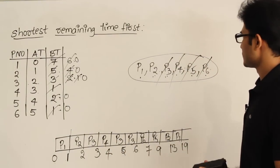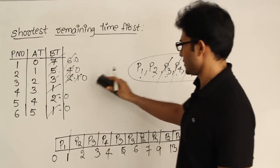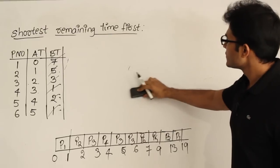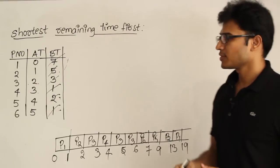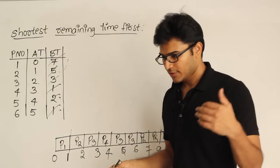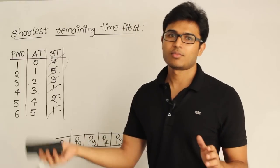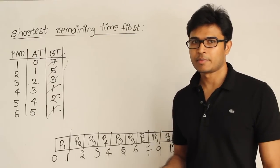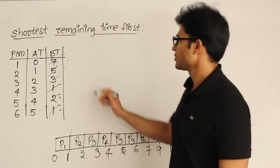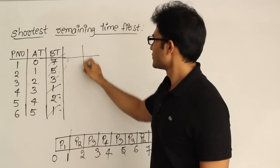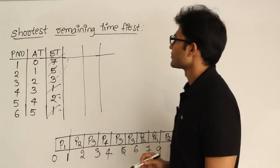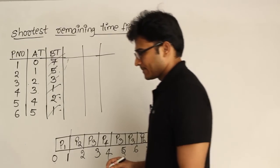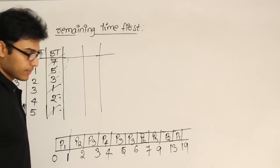The remaining factors can be filled out directly. Also, this algorithm does not have a convoy effect, and even if a process is very large, the shorter processes will get into execution once they become available. So starvation is not a concern with SRTF.